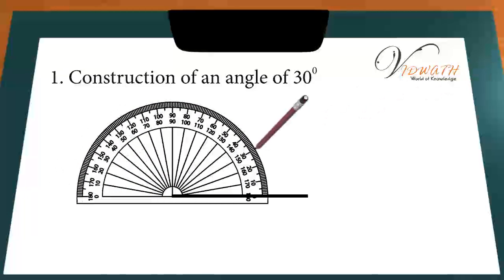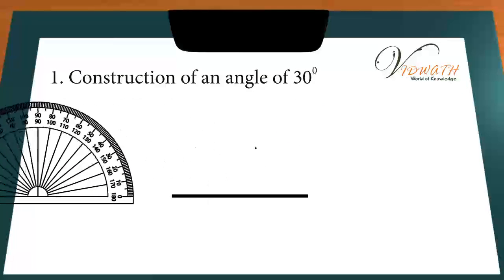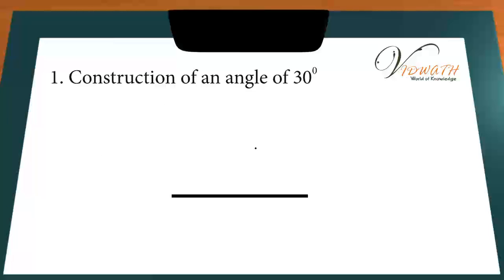Start from 0 degrees of the protractor, move up to 30 degrees and mark a point C at 30 degrees.